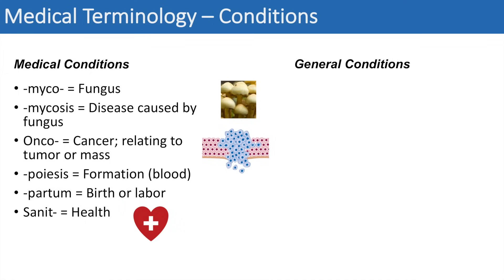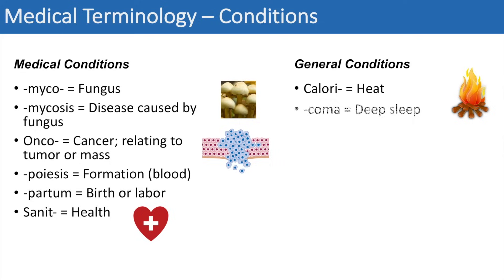The next set are general conditions. The prefix calori means heat — you can think of a calorie, which is simply a unit of heat. The next one is the suffix -coma, which simply means a deep sleep. The next one is gymno or gymna, which means naked. And the next one is vita or vito, which means life — you can think of vitality.